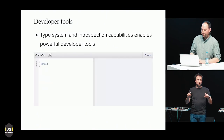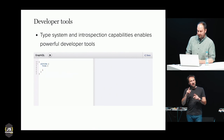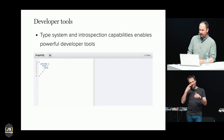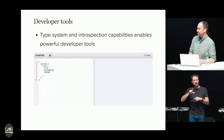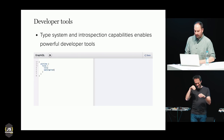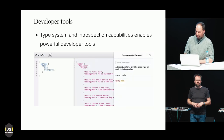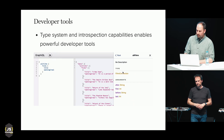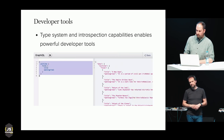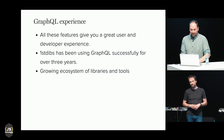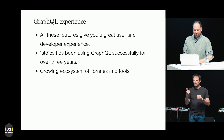GraphQL's built-in type system and introspection makes it possible to build really powerful developer tools. You get context-aware autocomplete and documentation right in your IDE. GraphiQL is an in-browser GraphQL IDE, and there are also editor plugins that give you basically all the same features right in your code while developing. All these features add up to a great user and developer experience. At First Dibs, we've been using GraphQL successfully for over three years.